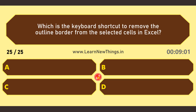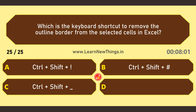Which is the keyboard shortcut to remove the outline border from the selected cells in Excel? CTRL+SHIFT+Underscore.